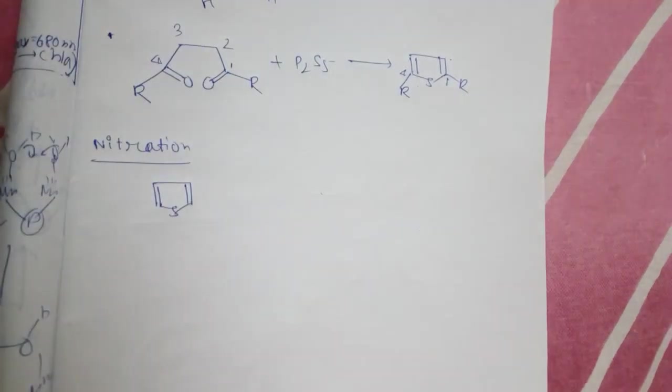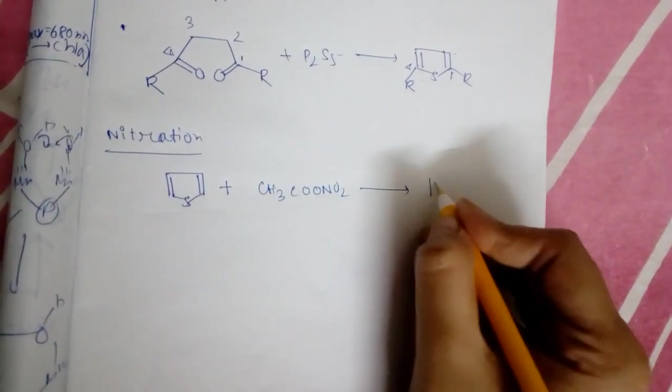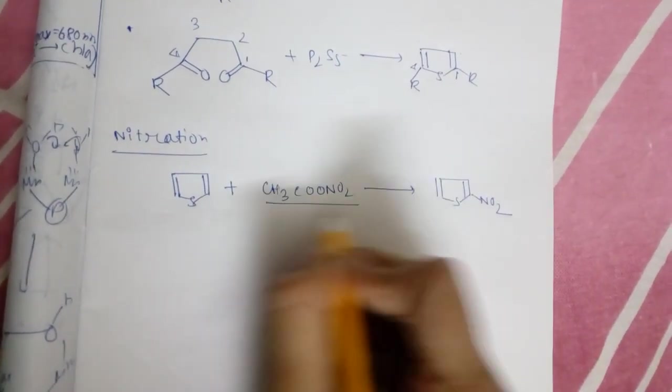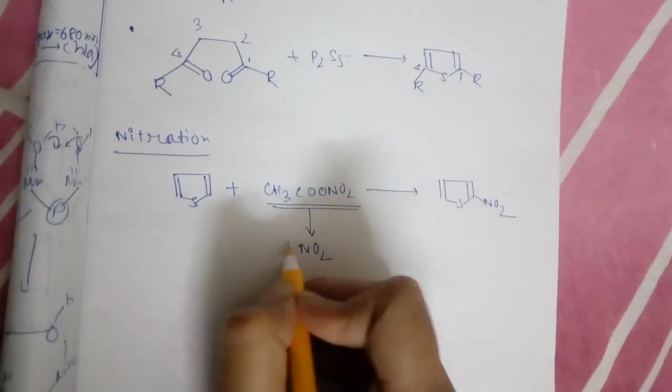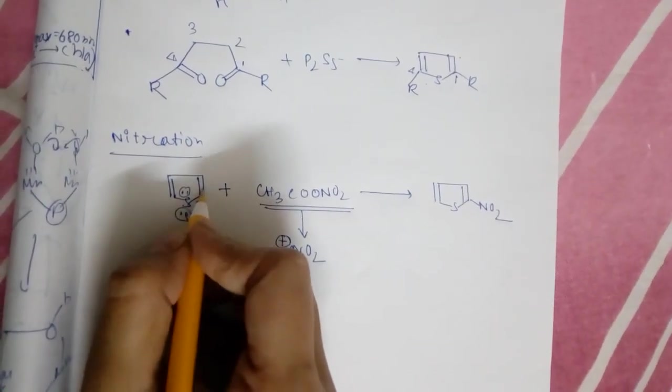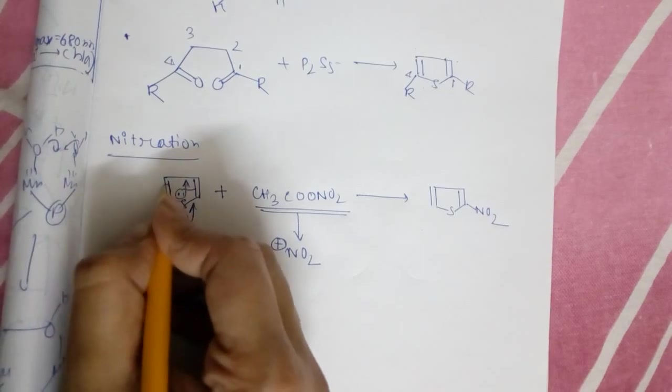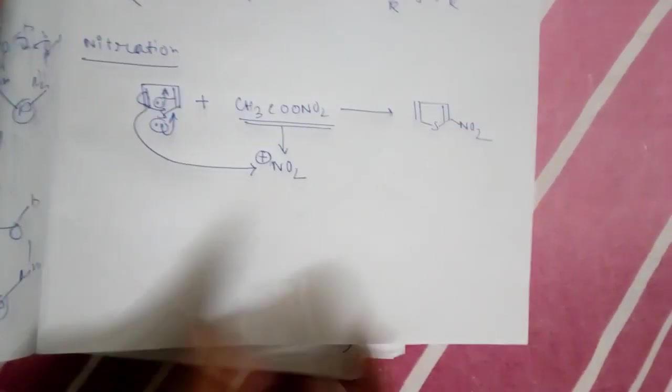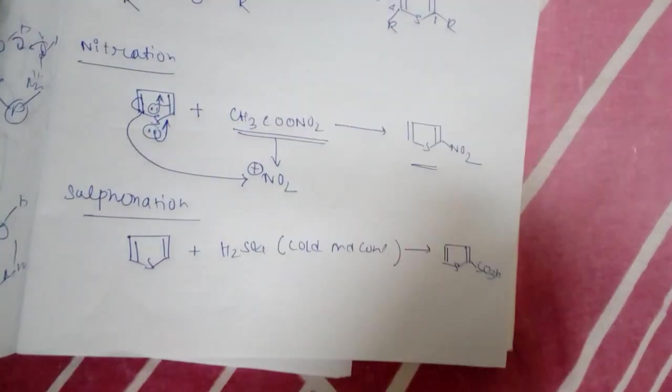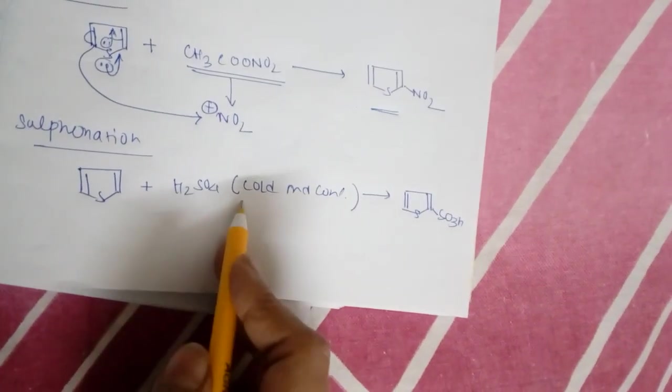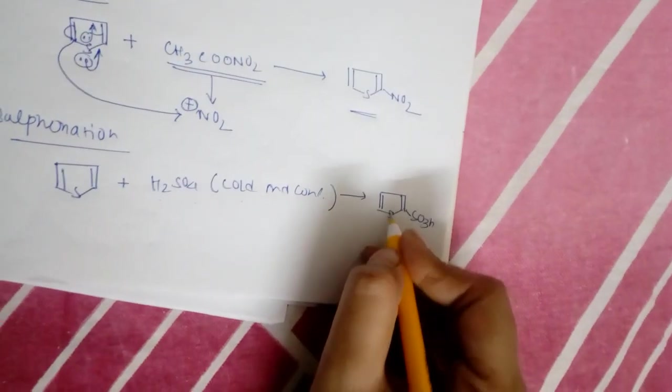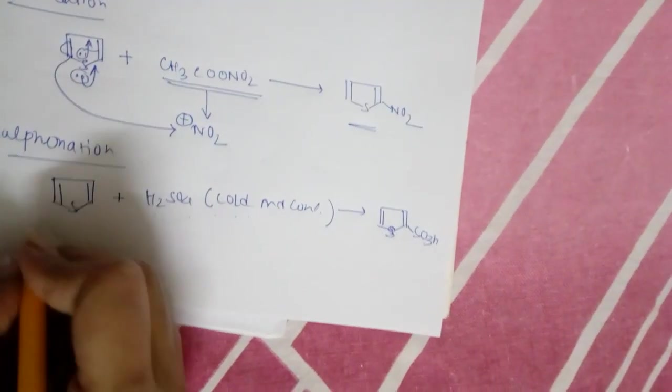Hence it will give nitration, sulfonation, halogenation, all the reactions. Nitration: thiophene plus HNO3 in acetic anhydride. Nitration occurs at one position. As you can see from this compound, NO2 positive comes and from this mechanism it will take up NO2 and this compound forms. Sulfonation: as it is too much reactive towards electrophilic addition, in cold condition concentrated H2SO4 can easily give this sulfonated thiophene. Halogenation also occurs.